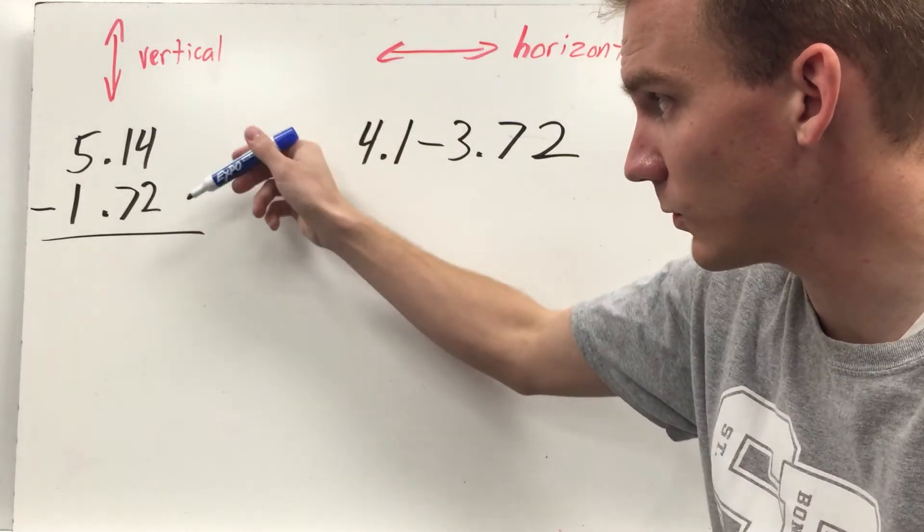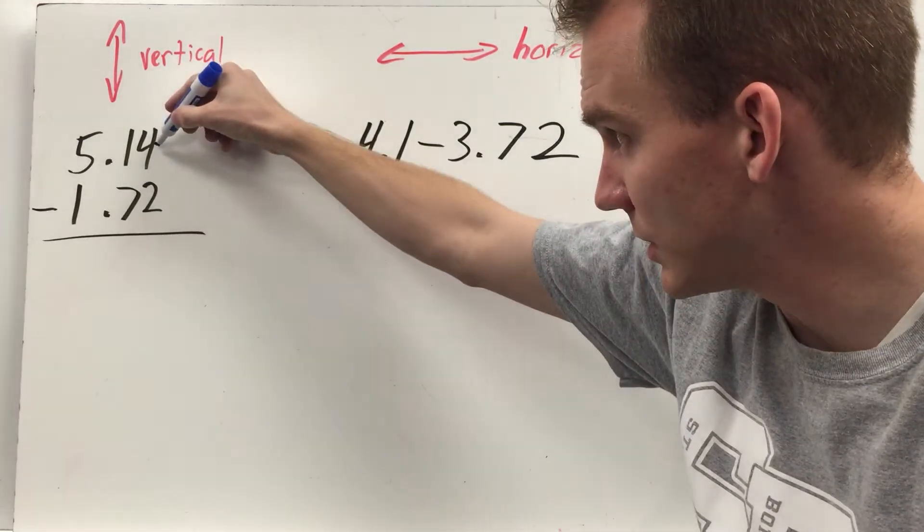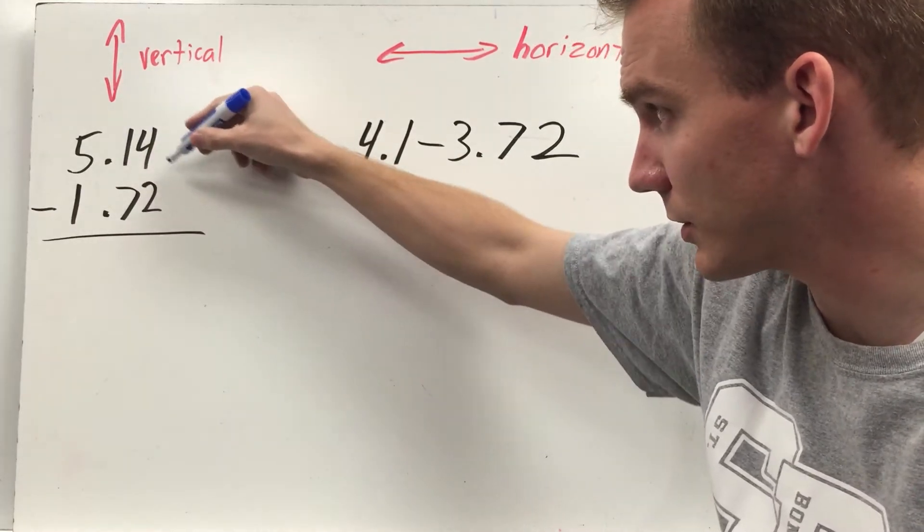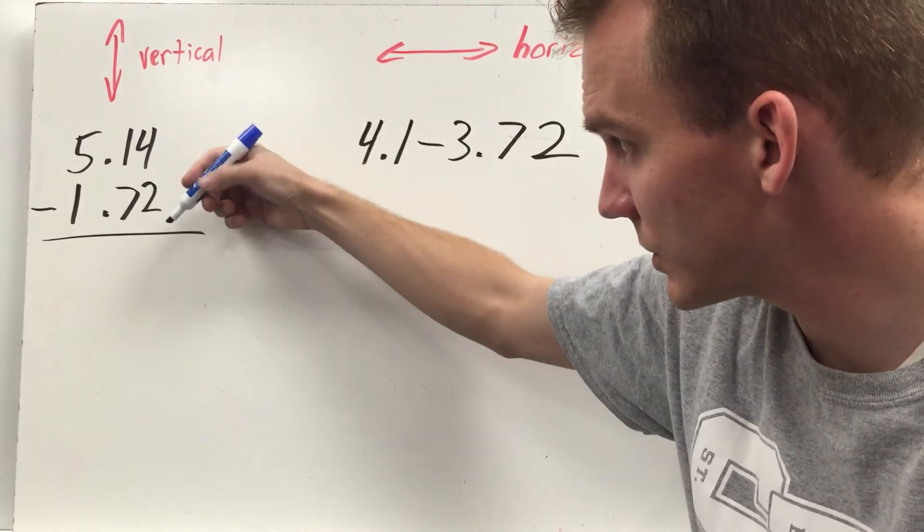Five and fourteen hundredths minus one and seventy-two hundredths. You just line up your decimal places, you start to the right. Four minus two is two.